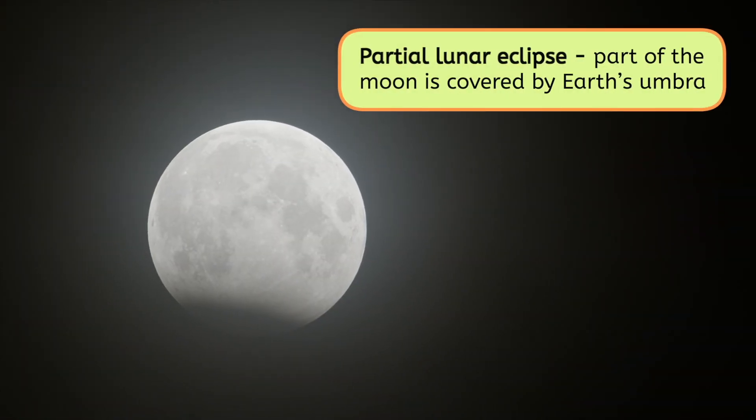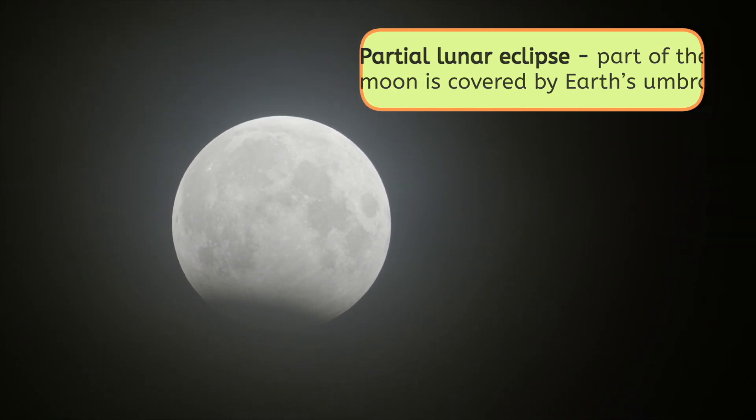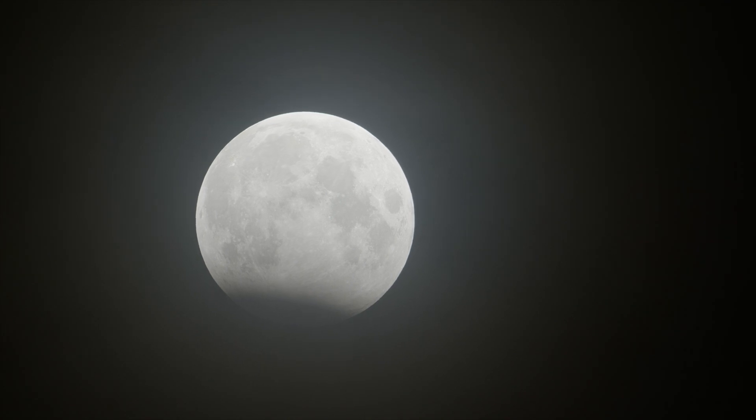A partial lunar eclipse happens when only part of the Moon is covered by Earth's Umbra. You'll see a dark shadow moving across the Moon, but the rest remains bright.